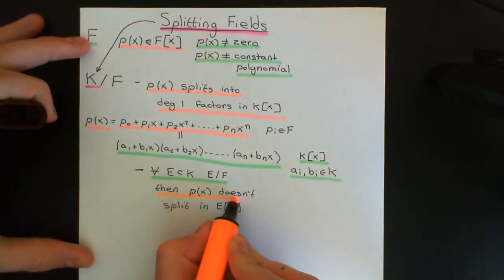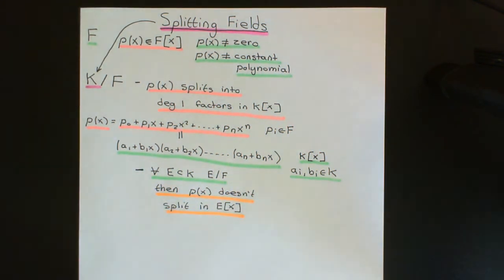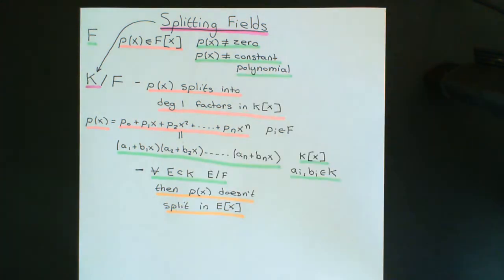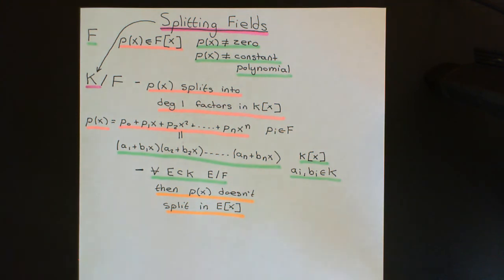So that is an important constraint to remember. A splitting field is the field extension of capital F such that the polynomial splits into degree one factors in the ring of polynomials over the splitting field, and for any proper subfield E of K that is still a field extension of F, P of X will not split completely into degree one factors over E. This rigorously captures that the splitting field is the smallest such field extension.